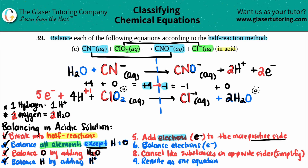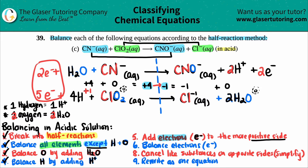This is a checkpoint: make sure the electrons you added are on opposite sides of the two half reactions. In this case they are on opposite sides, so I can proceed. If they were on the same side, you'd need to go back and try again — something went wrong.